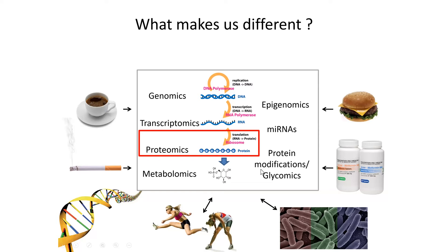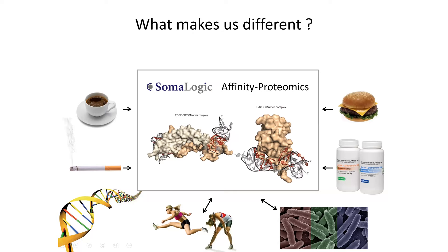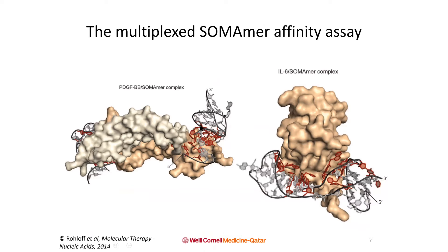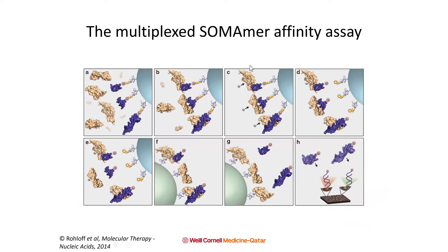In my talk today, I will focus on proteomics — specifically affinity proteomics using the SomaLogic platform. Before I get into the technicalities, let me briefly introduce what the SomaLogic platform does. SOMAmers are small DNA aptamers trained to bind specifically to protein epitopes. It's an affinity-based proteomics assay, and it's important for us as bioinformaticians to understand how to interpret the data.